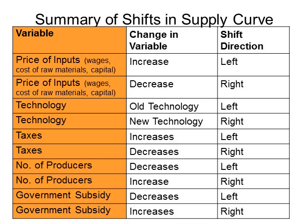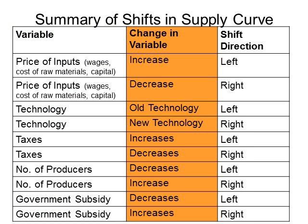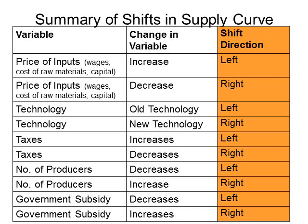The final thing that impacts the supply curve is government payments to firms to encourage them to produce particular products. Generally, the changes are either increases or decreases in these variables. Notice, however, that for technology it is not only the cost but whether the firm uses newer or older technology. The third column tells us what happens to the supply curve — either a shift to the left or a shift to the right.